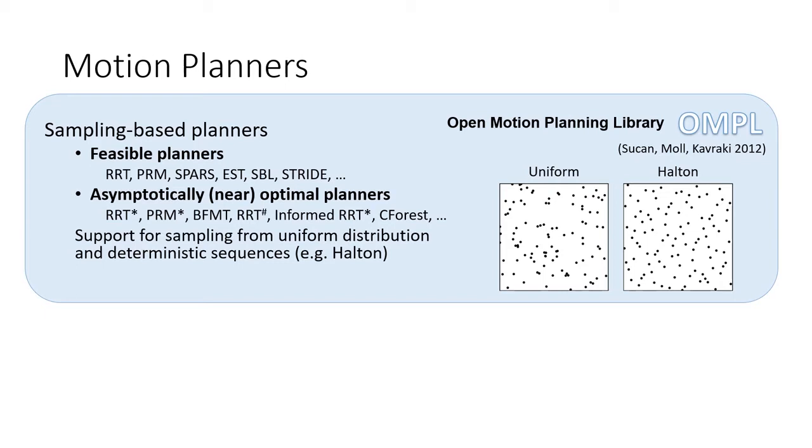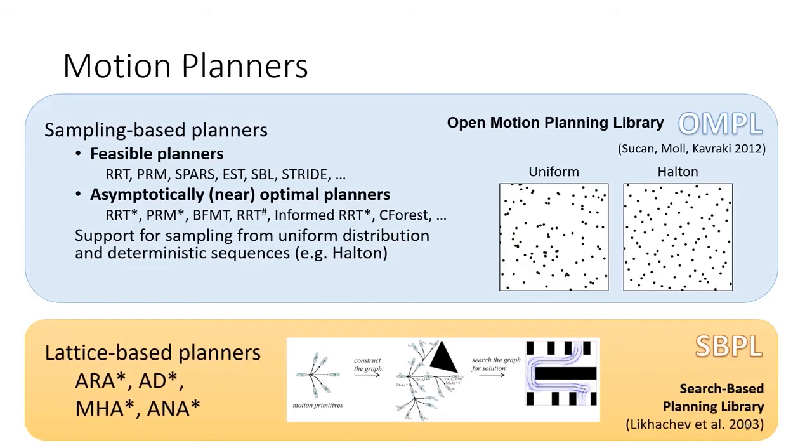Besides sampling-based planners, we additionally include lattice-based planners from the search-based planning library. These include algorithms, such as ARA star or MHA star that find a path by constructing a graph where motion primitives connect the vertices.